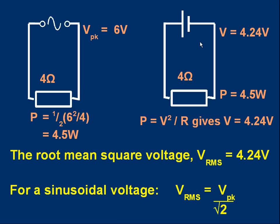If we go to the DC circuit, we can ask what steady voltage applied to the 4 ohm resistor would give the same power. Using P = V²/R with a power of 4.5 watts and resistance of 4 ohms, we solve for V and it comes to 4.24 volts.